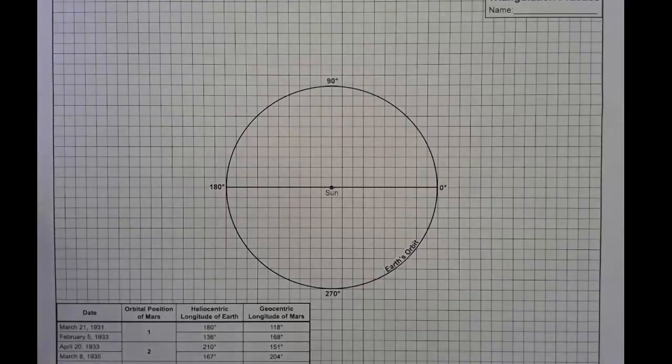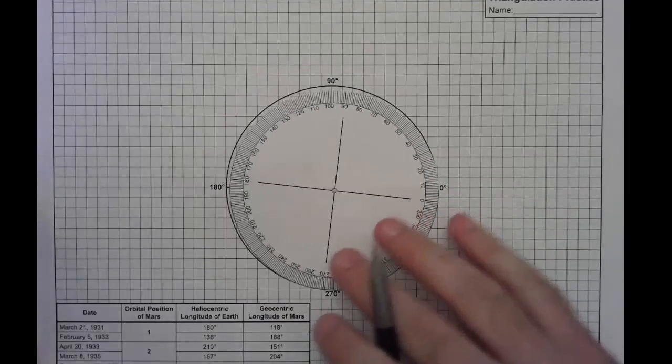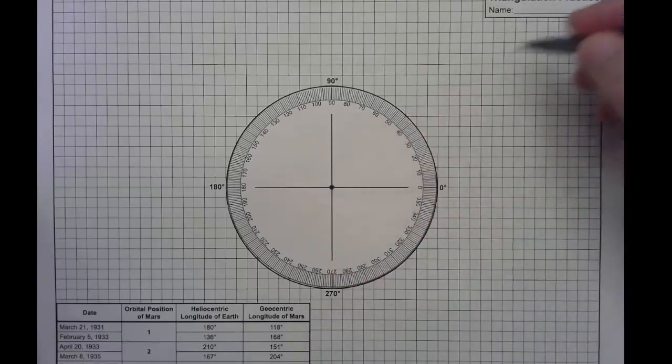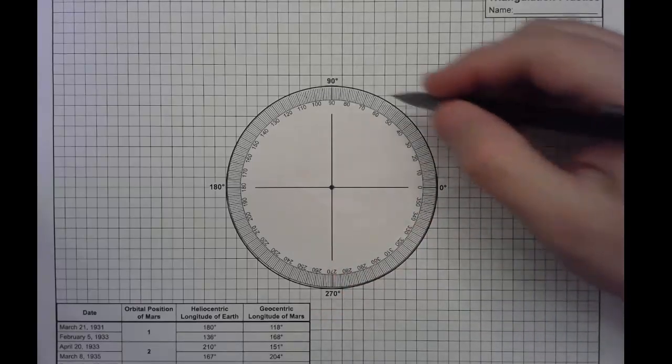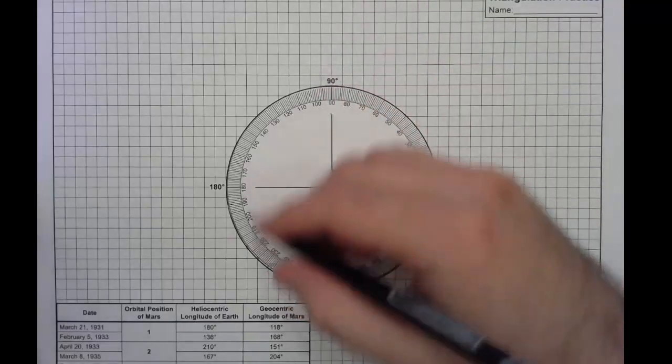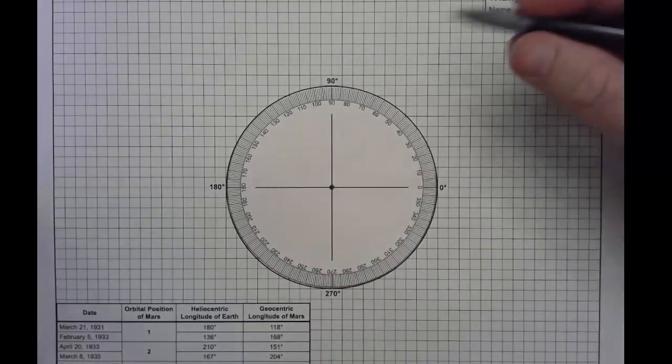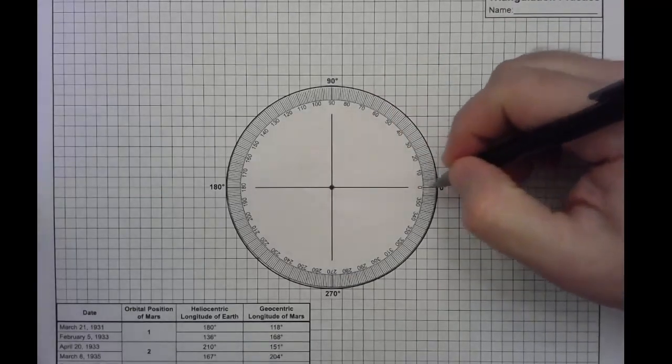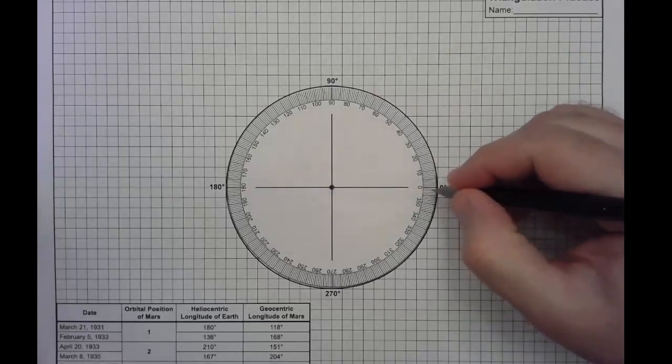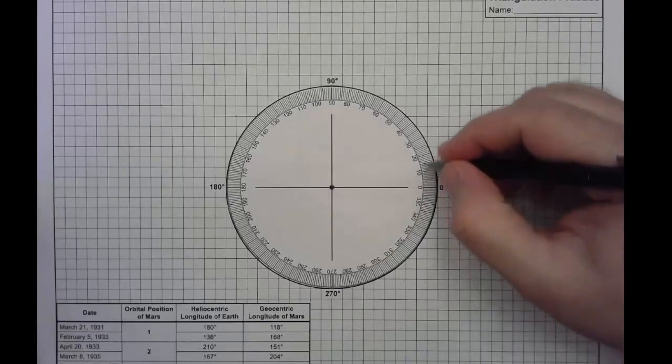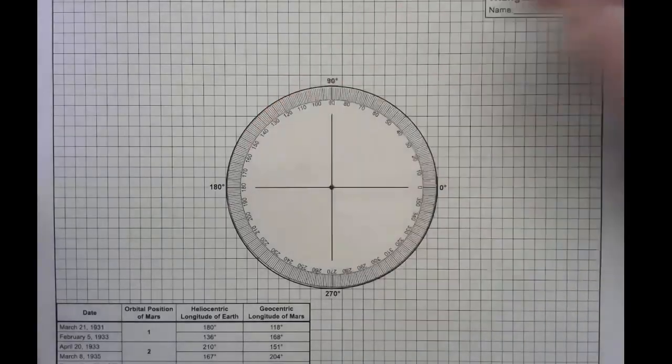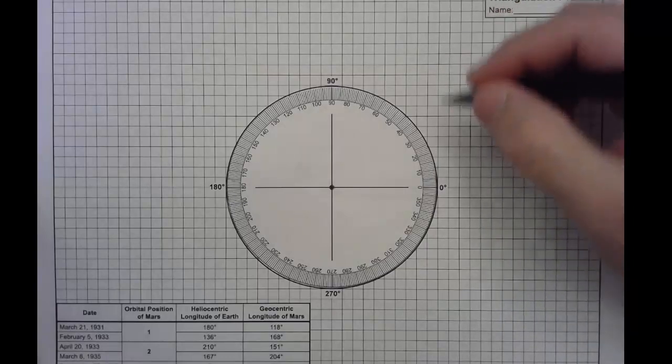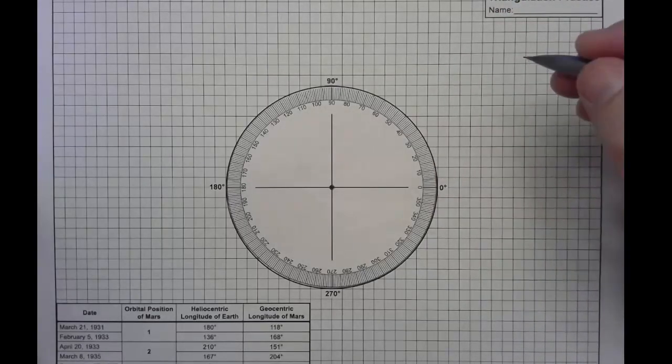But you can also use something like this tailor-made paper protractor. You can see through the paper, you can align to the grid, so that's not an issue. This is intentionally a little bit smaller than the actual Earth's orbit, so it makes plotting points a bit easier. And I have found that this is a little bit easier for some students, because you're just very clearly following the numbers here, and the gradations are the same. Each line here is one degree. The bolder lines are five degrees apart.